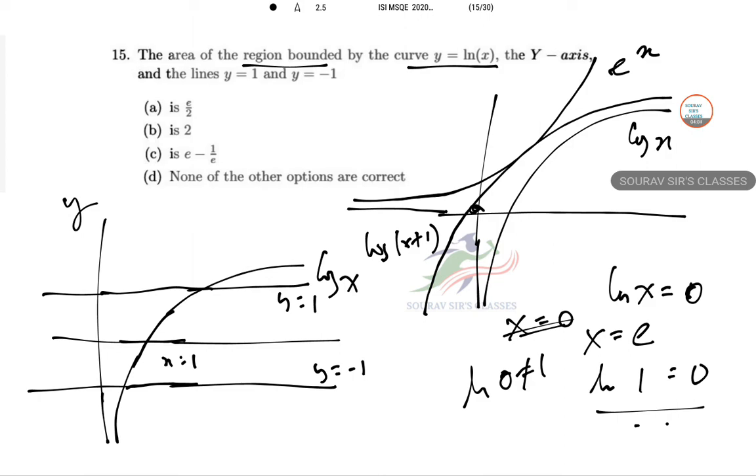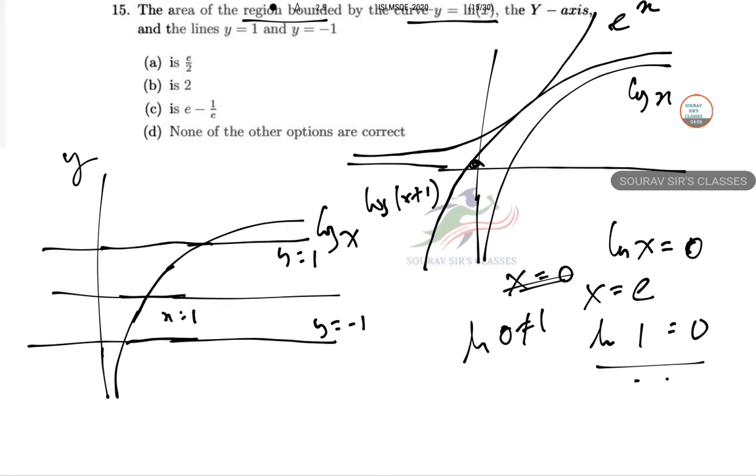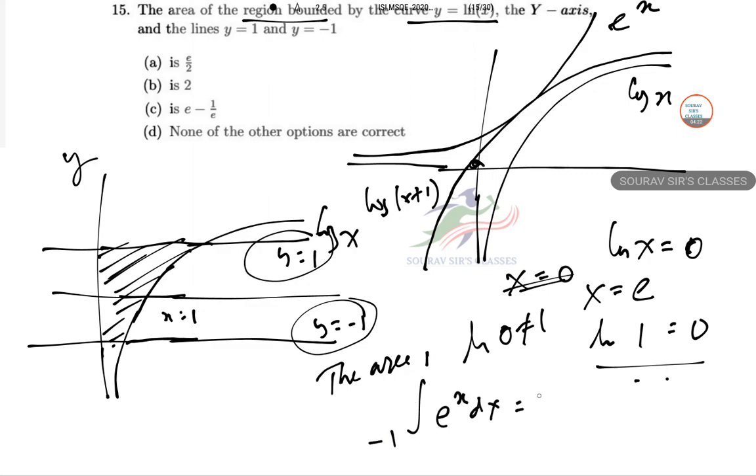The area is minus 1 to plus 1, that's the y fluctuation zone. So minus 1 to plus 1, and the function is e to the power y dy. This gives e to the power 1 minus e to the power minus 1, so e minus 1 by e.